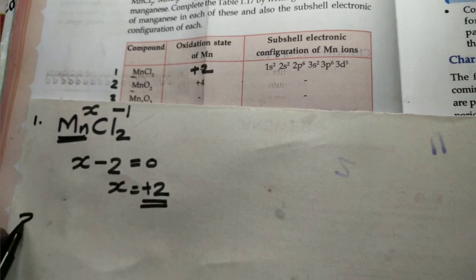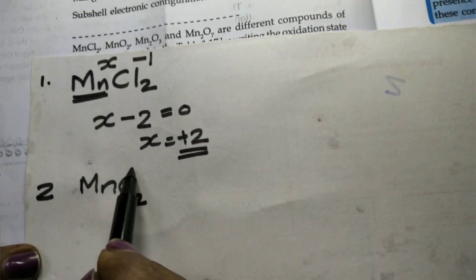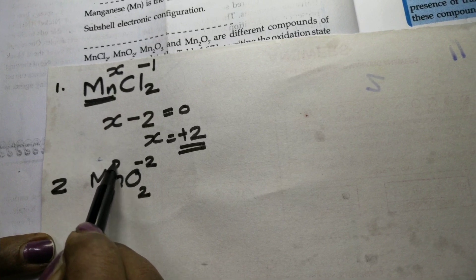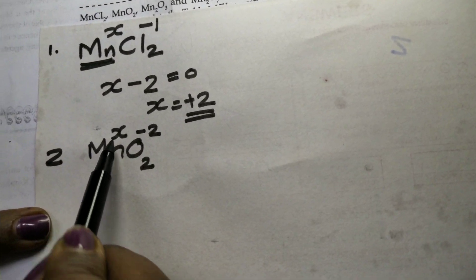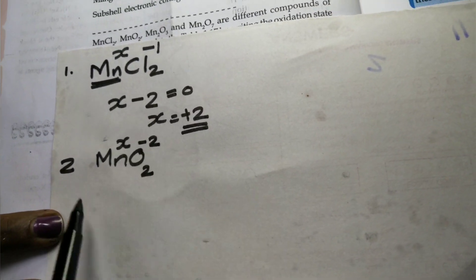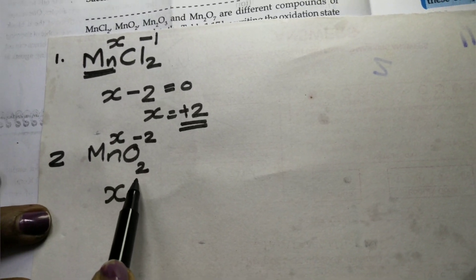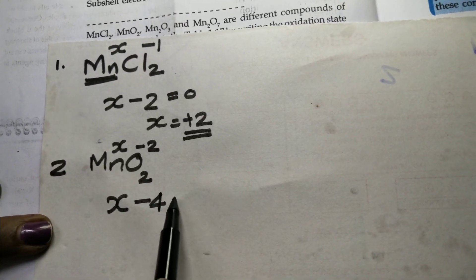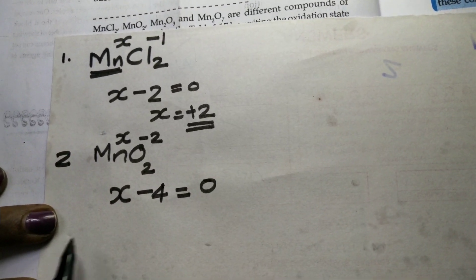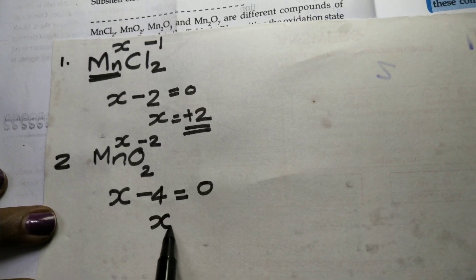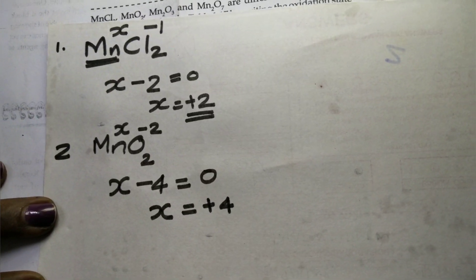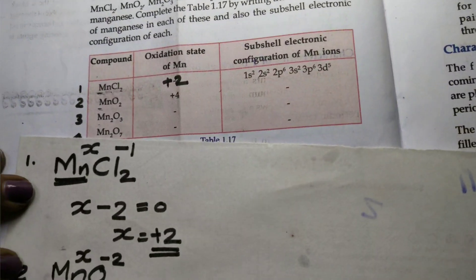Next, for the compound MnO₂, oxygen has oxidation state minus 2. Setting x plus 2 times minus 2 equal to zero: minus 4 equals zero, so x equals plus 4. The oxidation state of Mn in MnO₂ is plus 4.